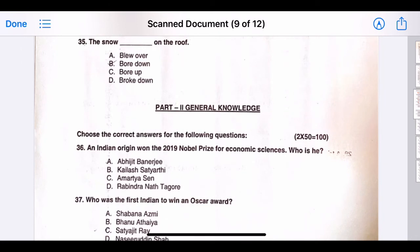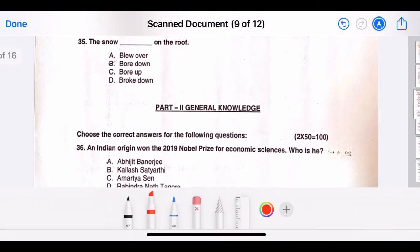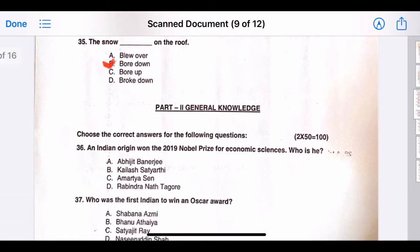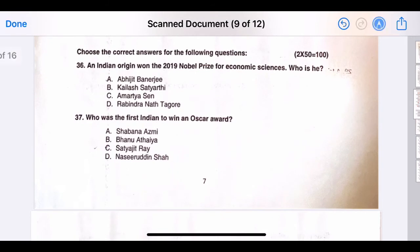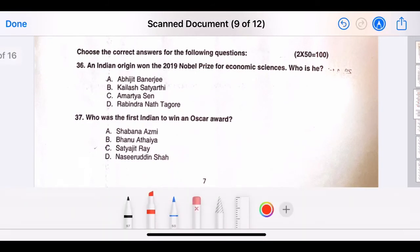Thirty-five, the snow blank on the roof. The correct answer is option B, bore down. Thirty-six, an Indian origin won the 2019 Nobel Prize for Economic Sciences. The correct answer is option A, Abhijit Banerjee.